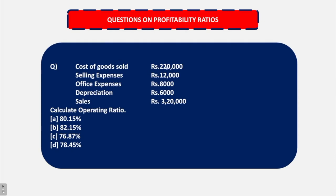A very interesting question. Cost of goods sold are given as 2,20,000; selling expenses 12,000; office expenses 8,000; depreciation is 6,000 and sales are given as 3,20,000. We have to find out the operating ratio.